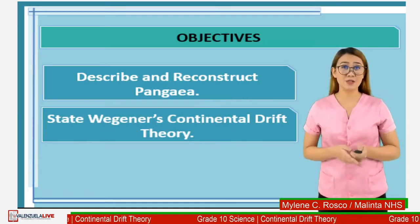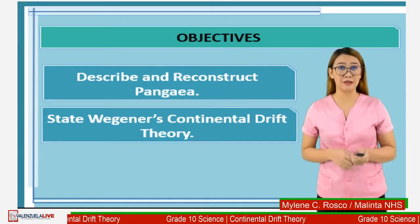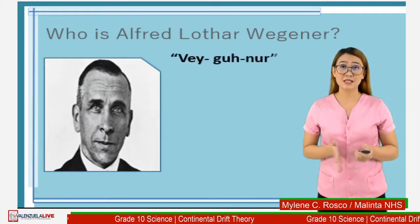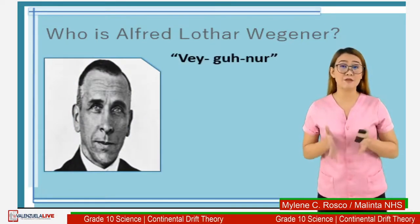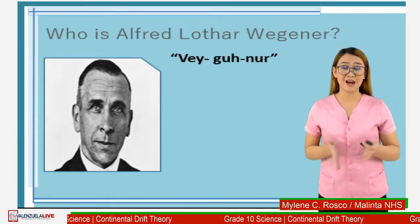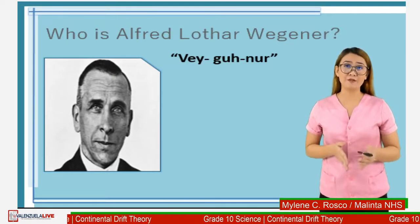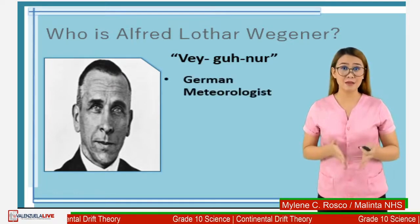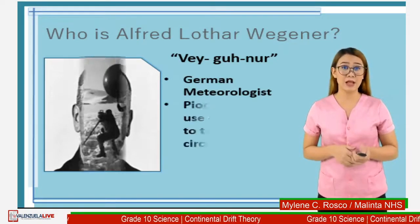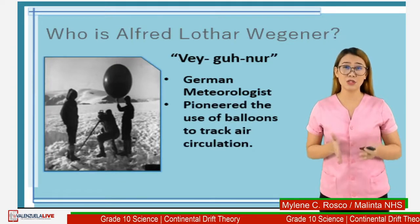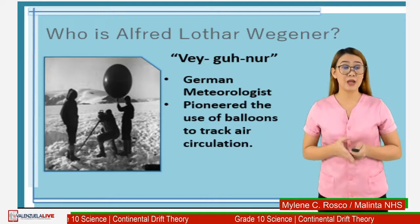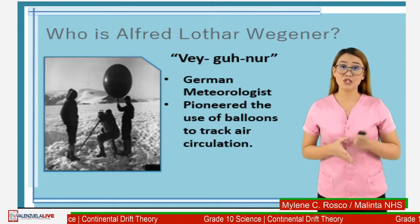Let us first know who is Alfred Lothar Wegener. Alfred Wegener is a German meteorologist. Since he is German, his surname is pronounced as Wegener. Alfred Wegener is an expert in climate and weather of the polar regions. He took part in an expedition to Greenland and pioneered the use of balloons to track polar air circulation. He was also a professor of meteorology and geophysics.